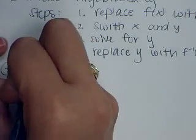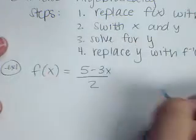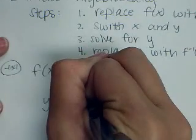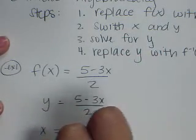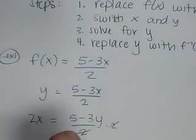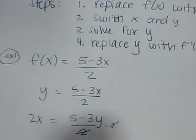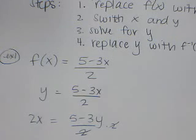Example number one. If f of x equals five minus three x over two, I'm going to replace f of x with y. That was step number one. Then I'm going to switch x and y. Then I'm going to solve for y. I'm going to multiply both sides by two. Two x equals five minus three y. Subtract five from both sides. Two x minus five equals negative three y. Divide both sides by negative three. And that's what y equals. So f inverse equals two x minus five over negative three. And that's our final answer.